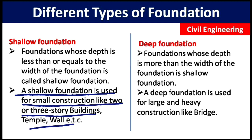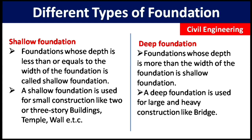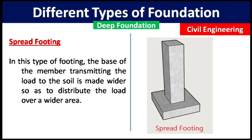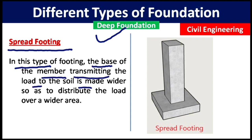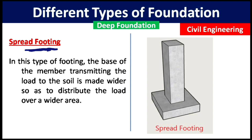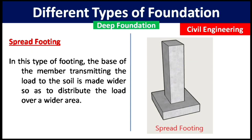Now let us see each type one by one. The first type of shallow foundation is spread footing. In spread footing, the base of the member transmitting the load to the soil is made wider so as to distribute the load over a wider area. Spread footing is for a single column — it takes the load from the column and spreads it over a wide area.